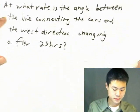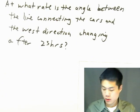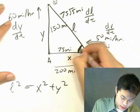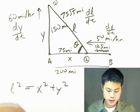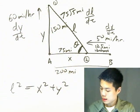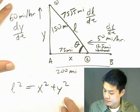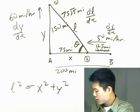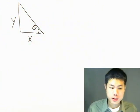That's the first part of the question. The second part asks: at what rate is the angle between the line connecting the cars and the west direction changing after 2.5 hours? The angle theta is the one between the line connecting the two cars and the westward horizontal direction. Let me draw the picture with Y, X, L, and theta.